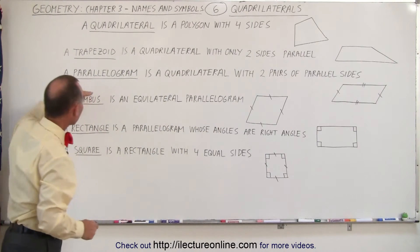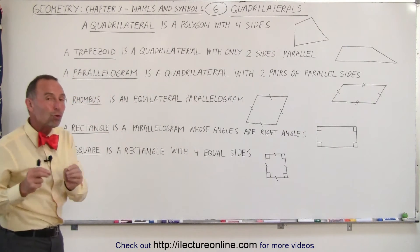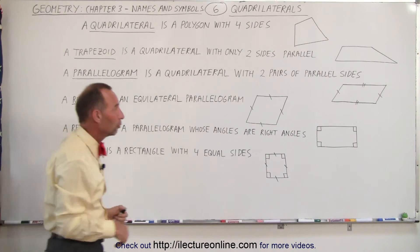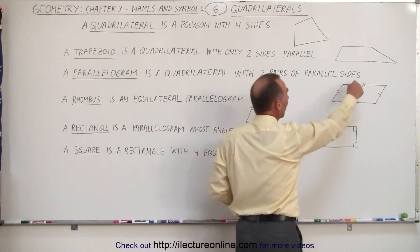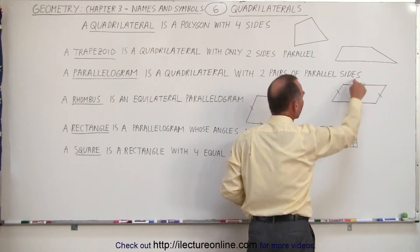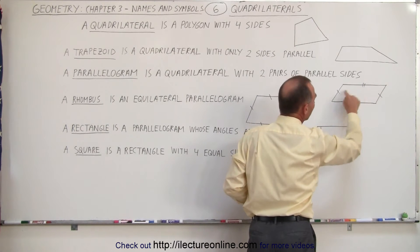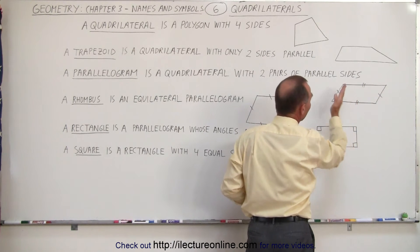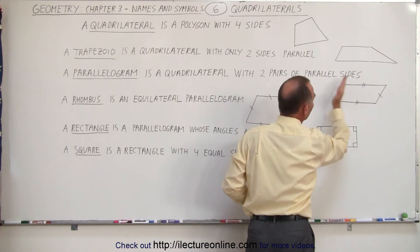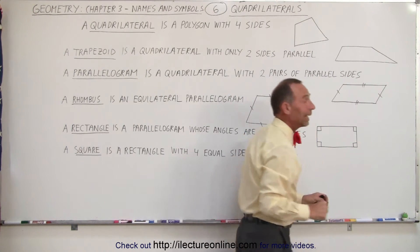A parallelogram is a quadrilateral that has two pairs of parallel sides. In this example, notice that the top side and the bottom side are parallel to one another. Also notice that they are equal in length, and that the two sides over here are parallel to one another and also equal in length.